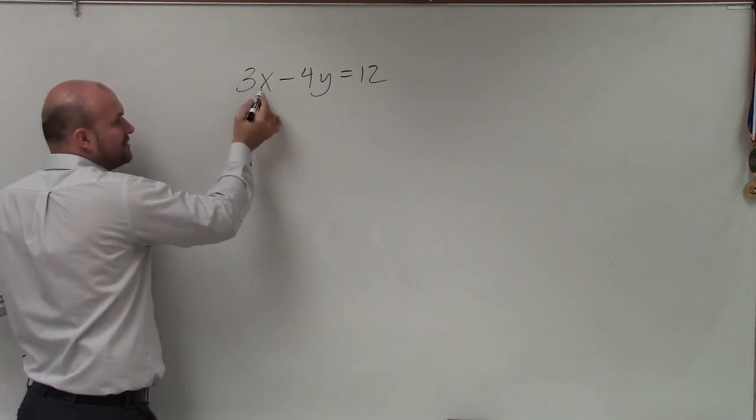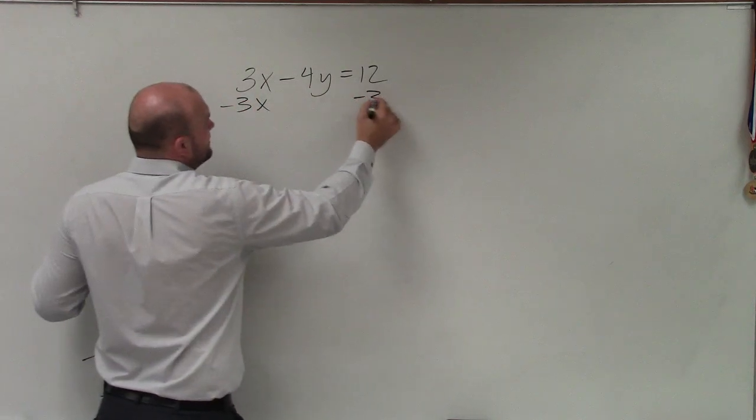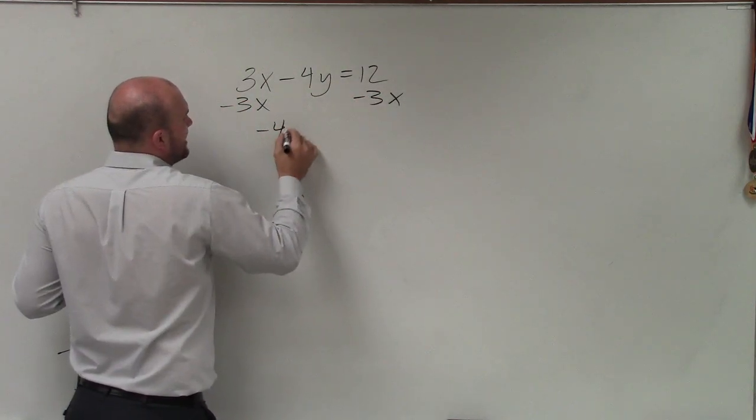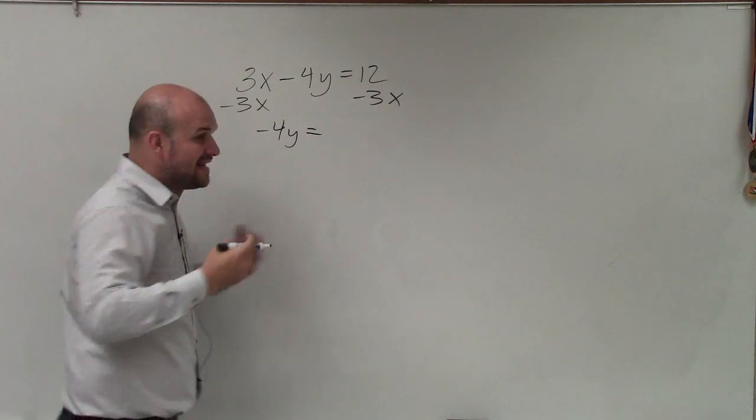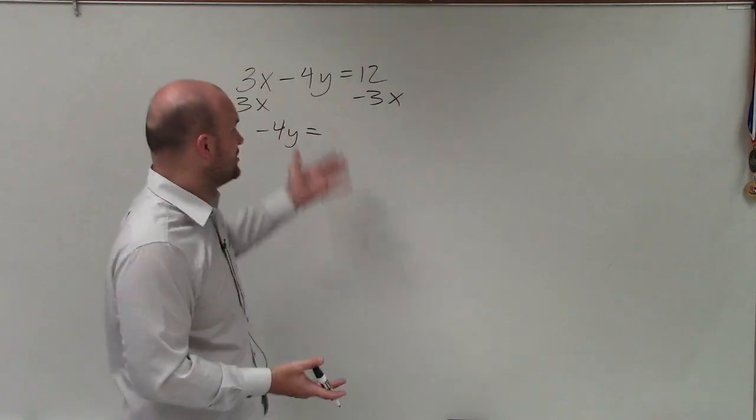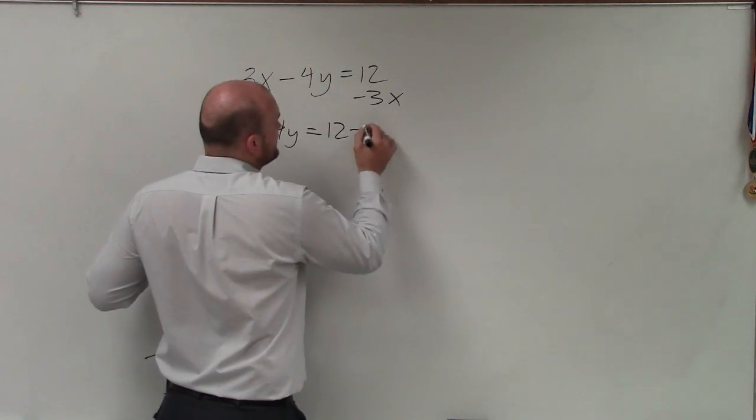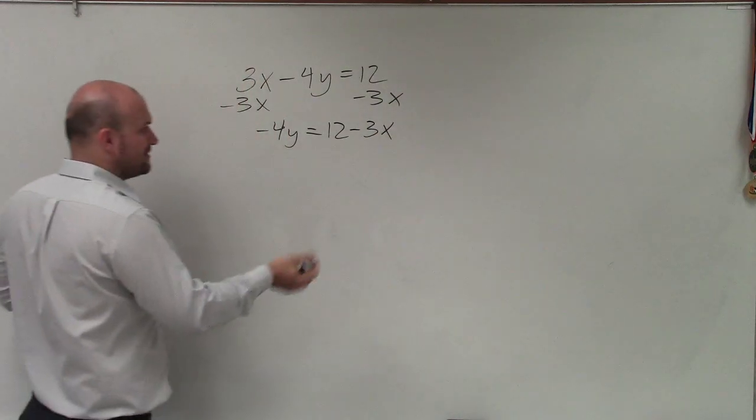And rather than it just being added by 3, it's now being added by 3x. So I have to subtract 3x. And what also gets a lot of students is when we were solving equations, it was always like terms. Well, here 12 and negative 3x are not like terms. So I can't combine them. So I'm just going to leave it as 12 minus 3x.